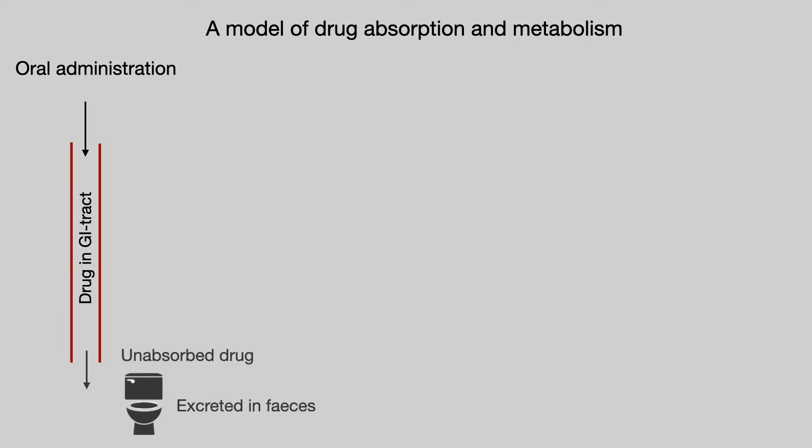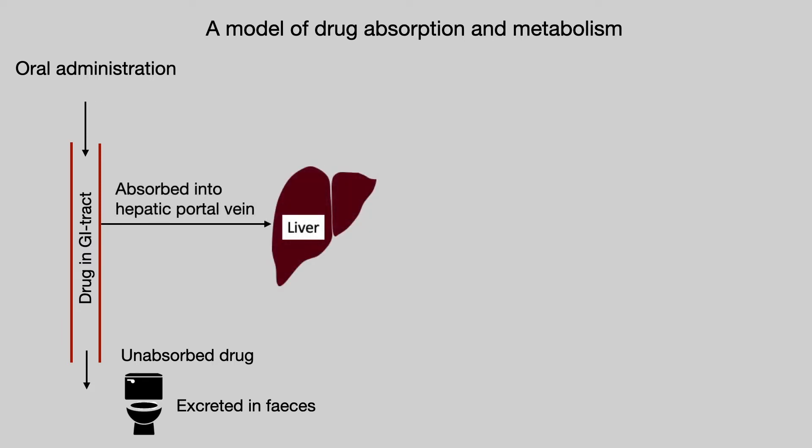In the tradition of these videos, we start with a model. If you take a drug orally, it will go into your gastrointestinal tract. It might pass all the way through your GI tract as unabsorbed drug and be excreted in faeces. More likely, at least some portion of that drug will be absorbed through the GI tract. Human physiology dictates that anything absorbed from the GI tract goes into the hepatic portal vein and then into the liver.